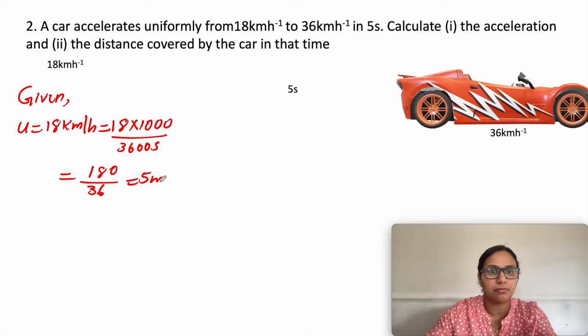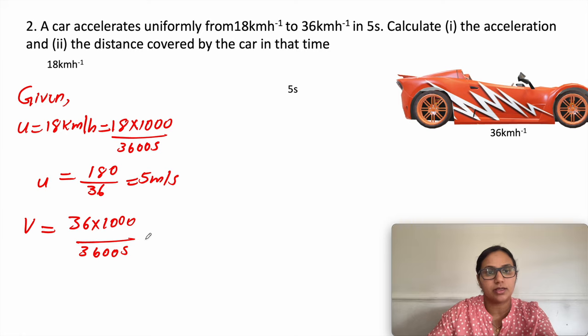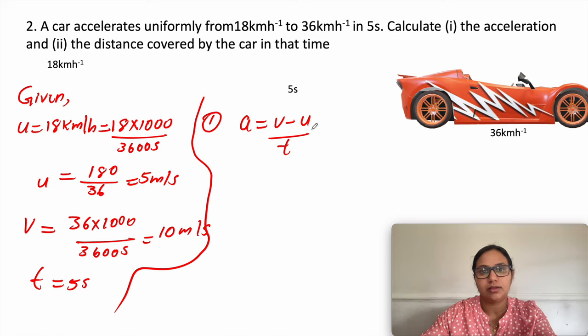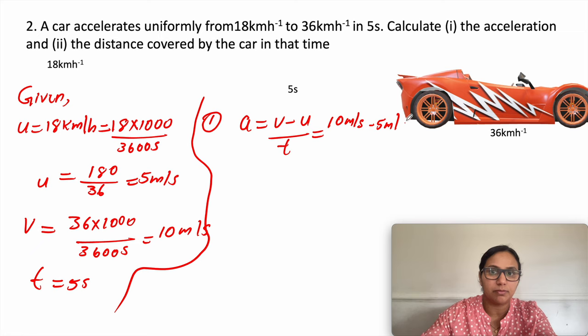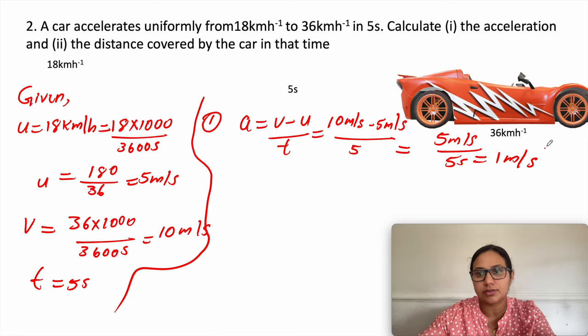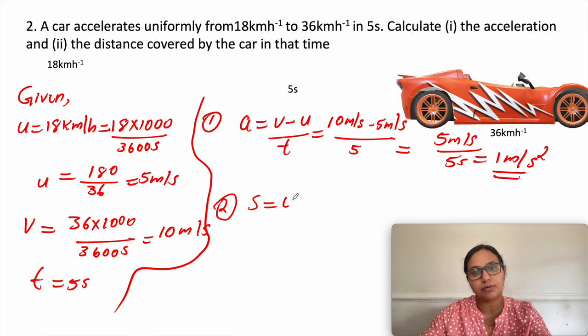Final velocity v is 36 km/h: 36 into 1000 divided by 3600 gives 360 divided by 36, which equals 10 meter per second. Time is 5 seconds. Acceleration: a = v minus u divided by t equals 10 minus 5 divided by 5, which gives 5 divided by 5 equals 1 meter per second square.